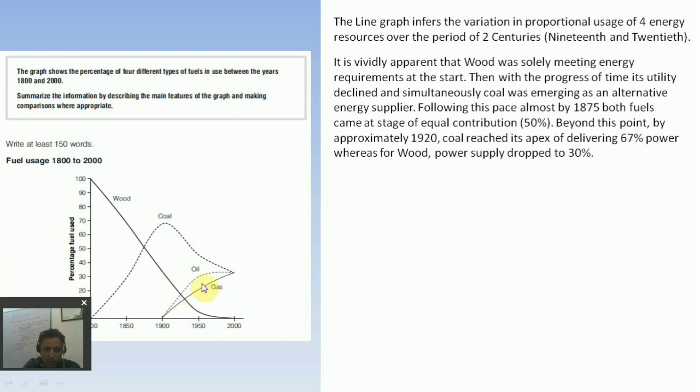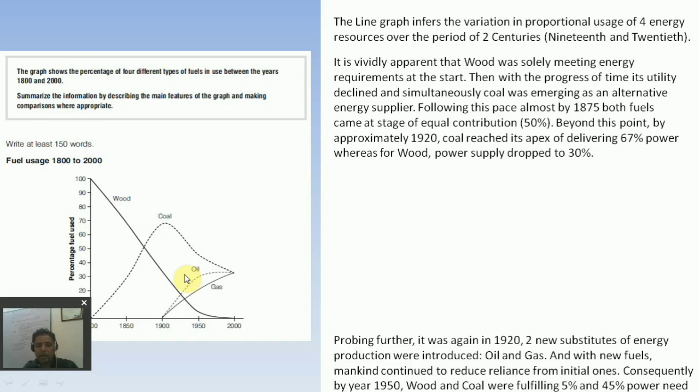Beyond this point, by approximately 1920, somewhere here, coal reached its apex of delivering 67% power, whereas for wood power supply dropped to 30%. By year 1920 it is somewhere 30%.